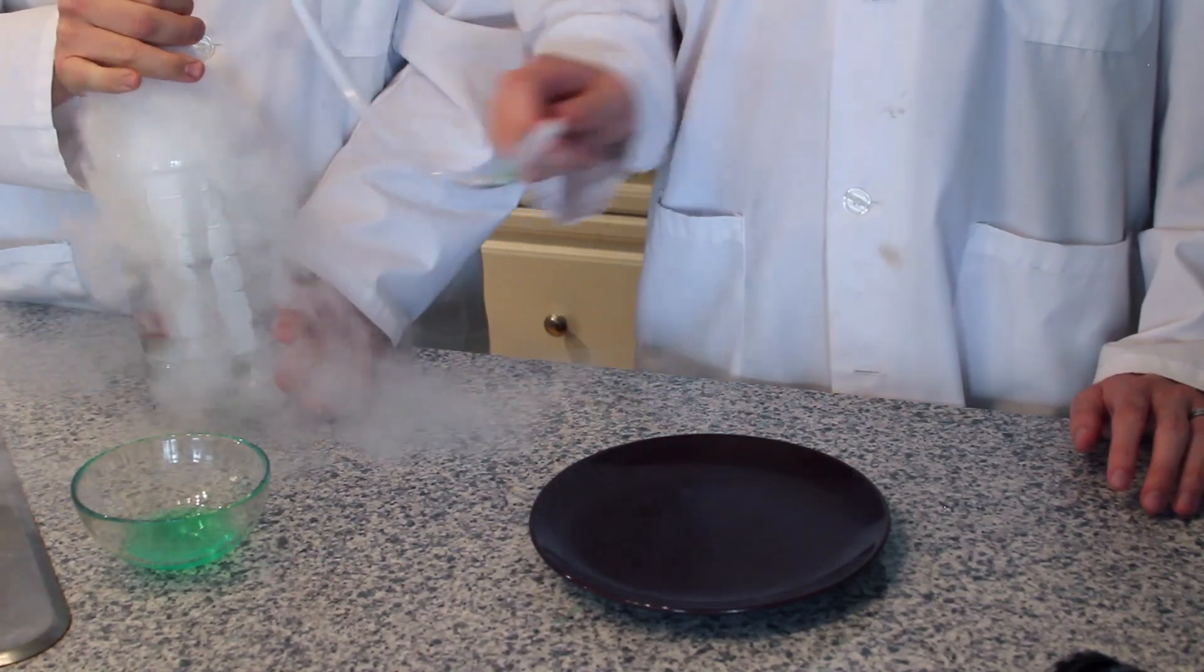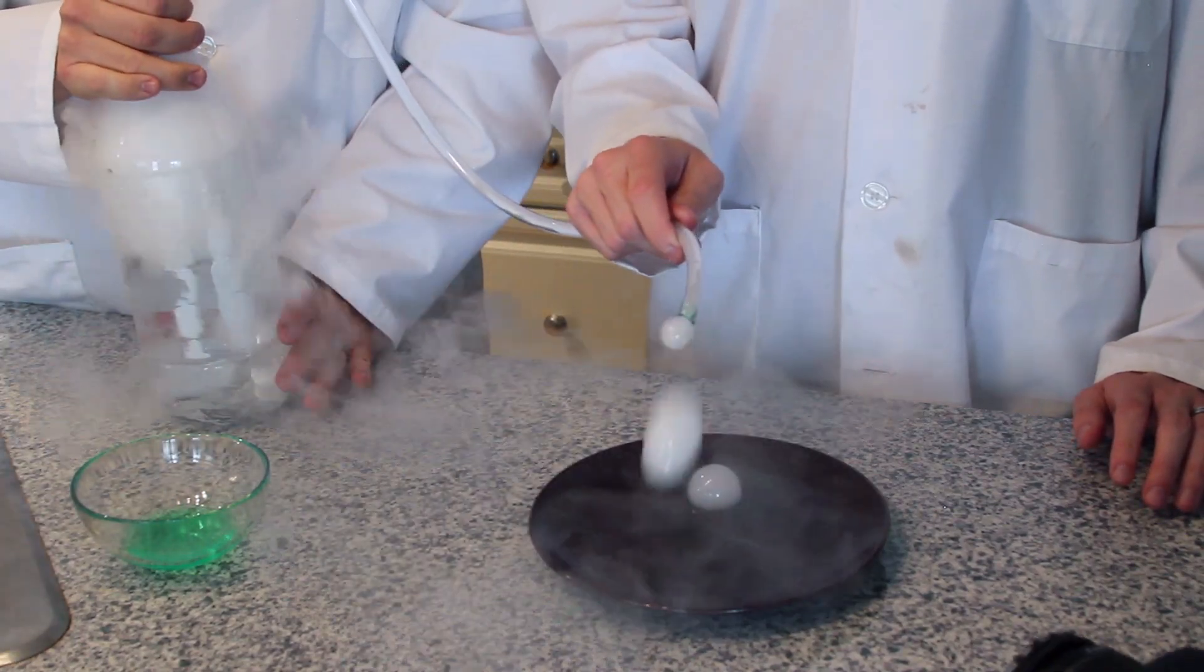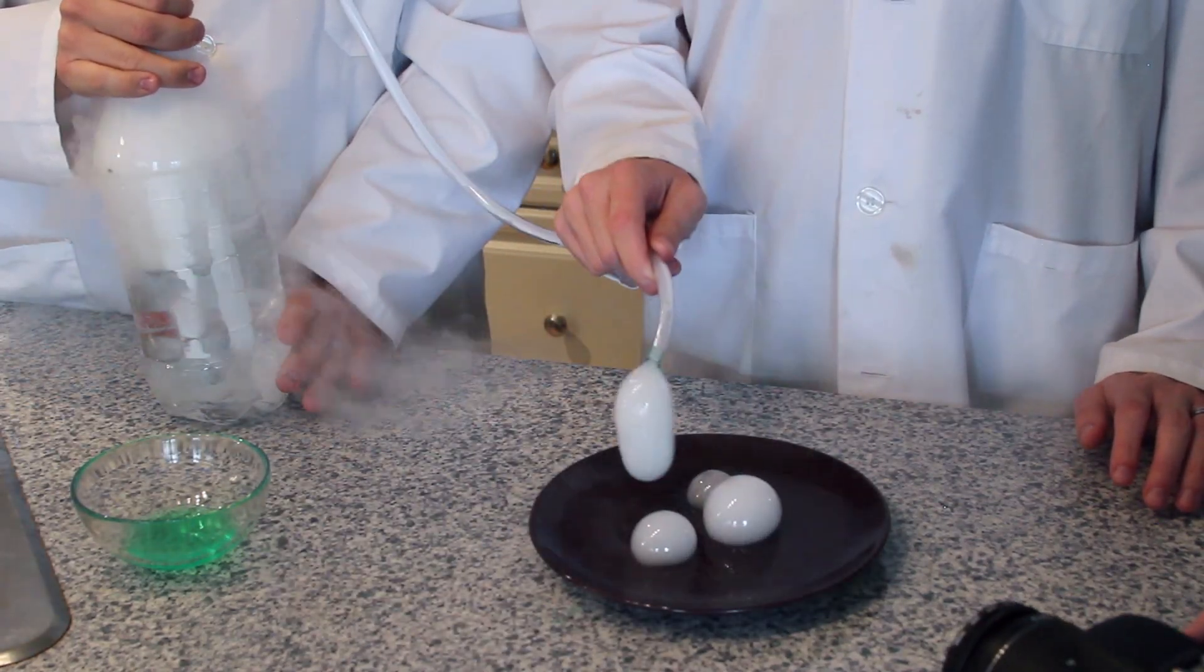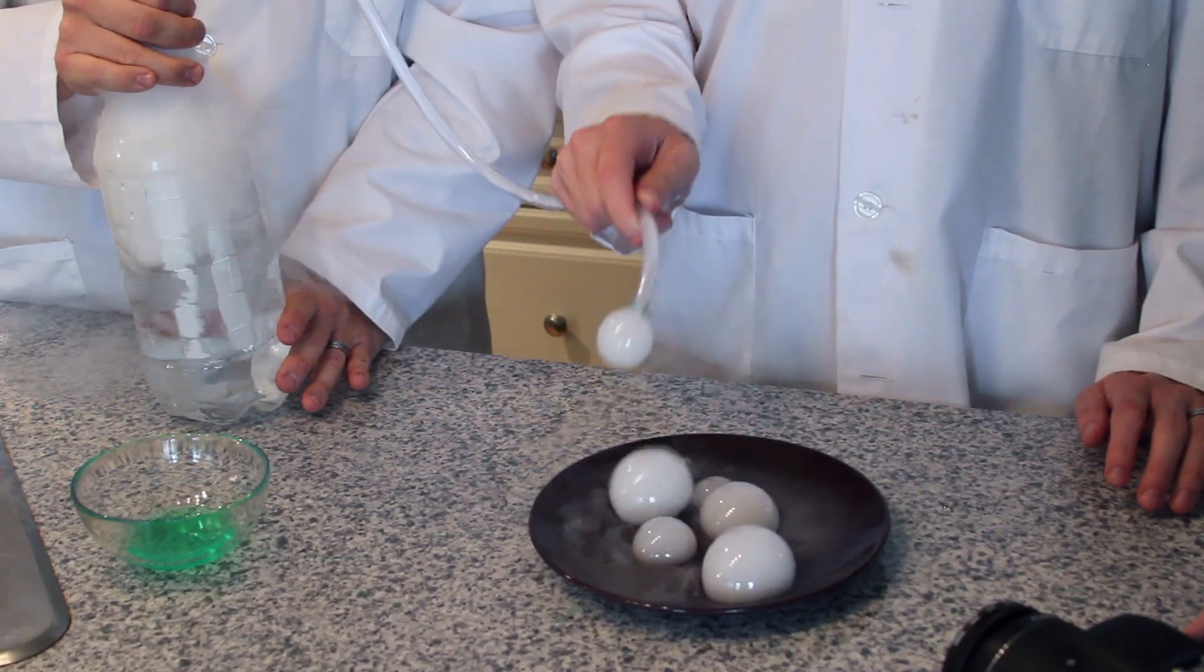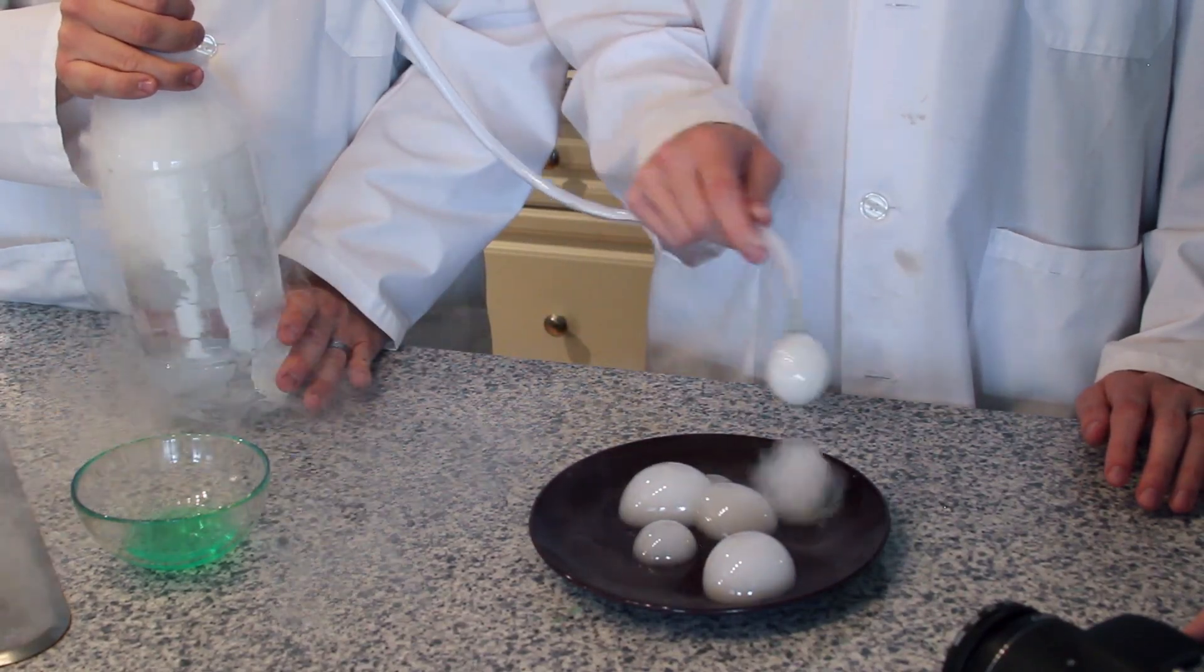The final step is to dip the rubber tubing into the dish soap, then press the funnel tightly over top of the two liter bottle. This forces the carbon dioxide gas through the tubing, creating smoky CO2 bubbles.